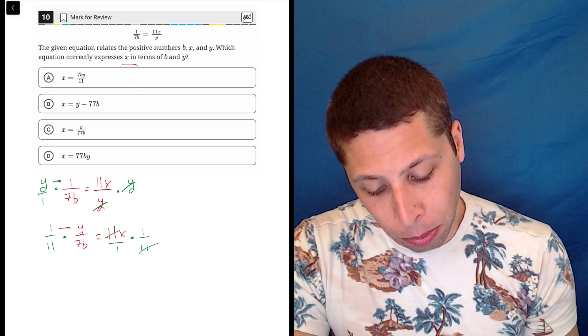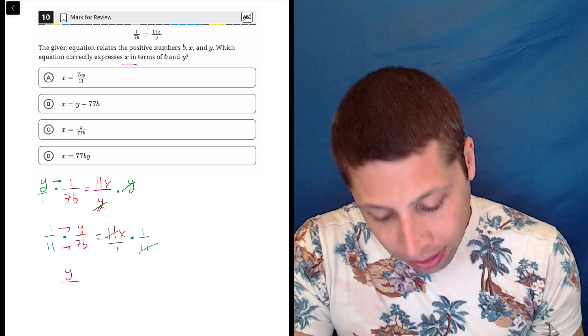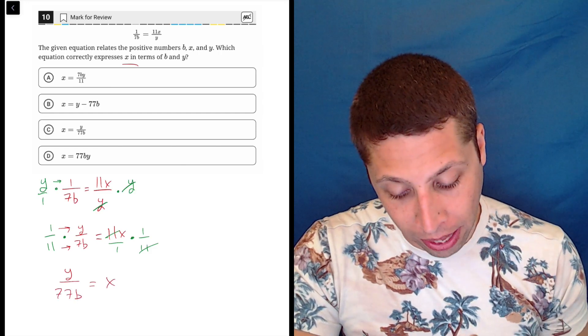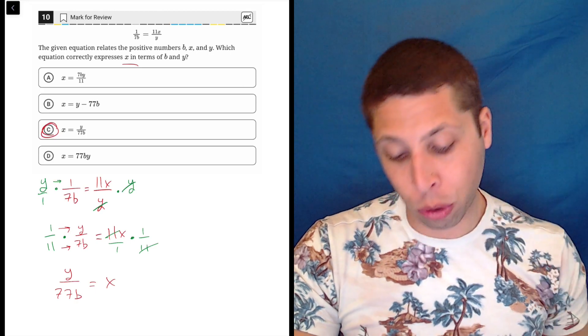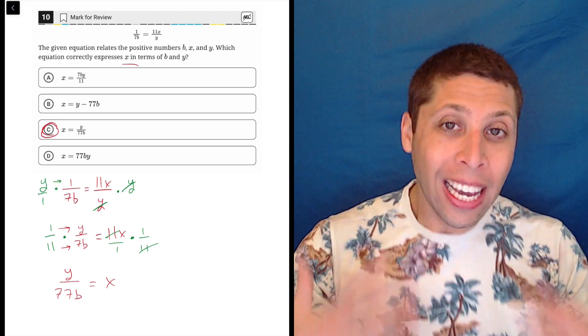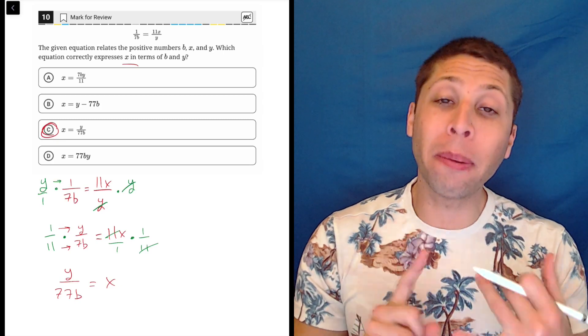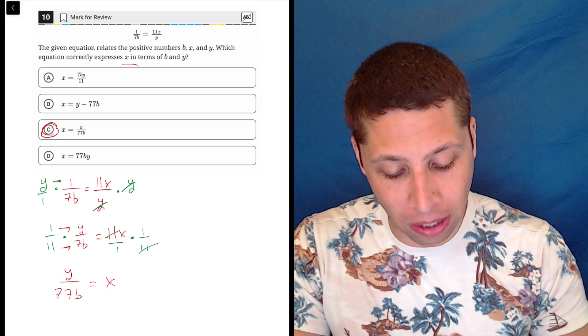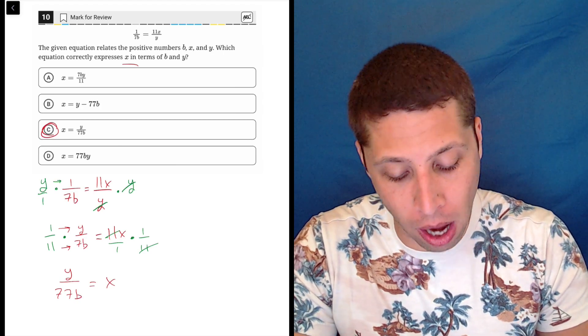So now I have some basic fraction multiplication. Y times one is Y. 11 times seven B is gonna be 77B. And that is just equal to X by itself. And that is what choice C says. So that is what the answer is. So I get why that's a little confusing. Probably if you don't like algebra, it's because you don't really understand fractions, which come up in algebra quite often. So there's a little bit of this problem going on.